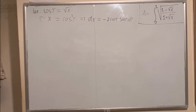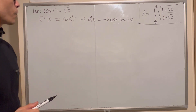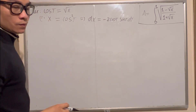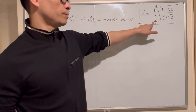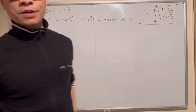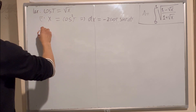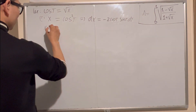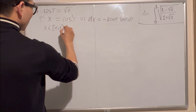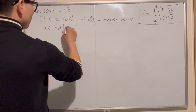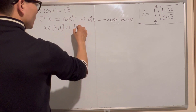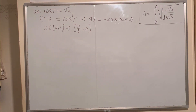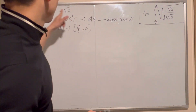When you differentiate from one side you get it correct. You have to be determined about the limits of integration. Just substitute: t will be from π/2 to zero. That is the new limit of integration with cos t.